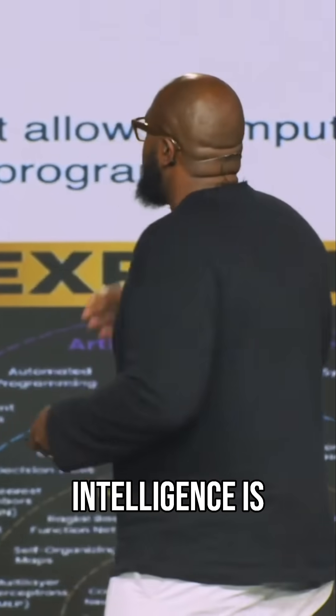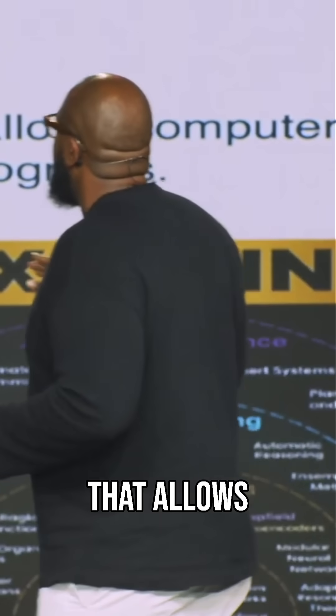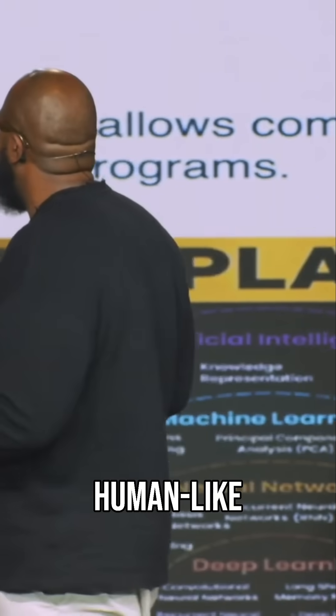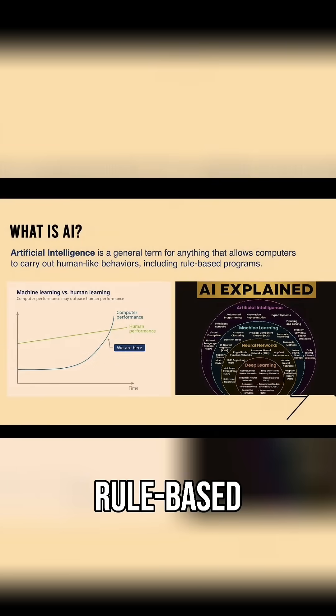What is AI? Artificial intelligence is a general term for anything that allows computers to carry out human-like behaviors, including rule-based programming.